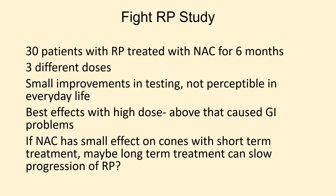The promising results in animal models of RP led to the FITE RP study, in which 30 patients with RP — six of whom had Usher Syndrome — were treated with one of three different doses of NAC for six months. There were small improvements in visual function testing that were not perceptible in everyday life, but when vision was tested in various ways, there was some evidence of improvement in some patients, more so in patients receiving a high dose versus a low dose of NAC. Further increases in dose above that high dose caused upset stomach and other GI problems, so the maximum tolerated dose was identified.